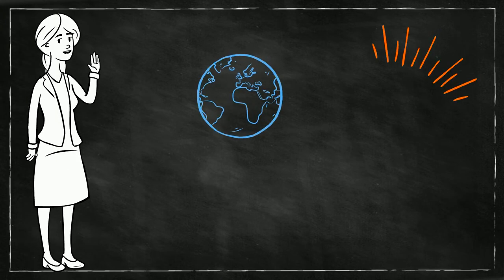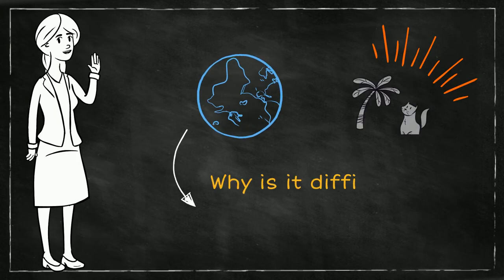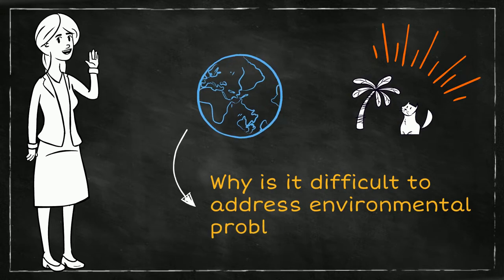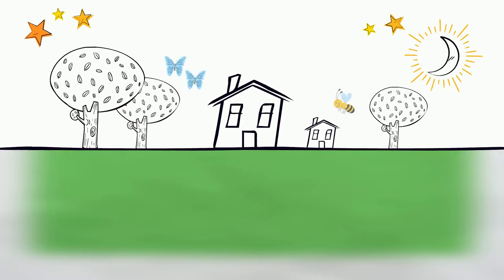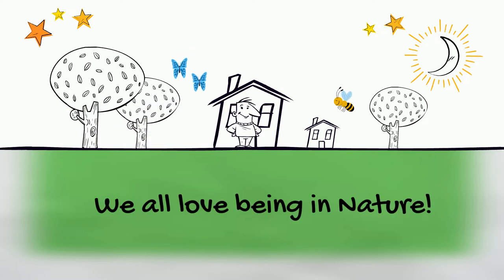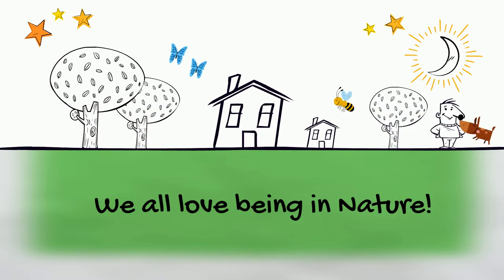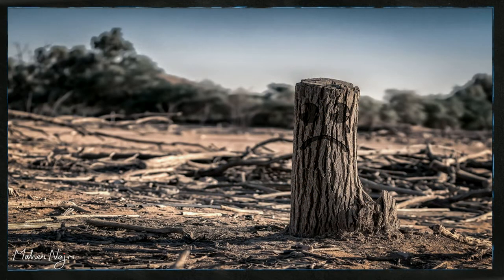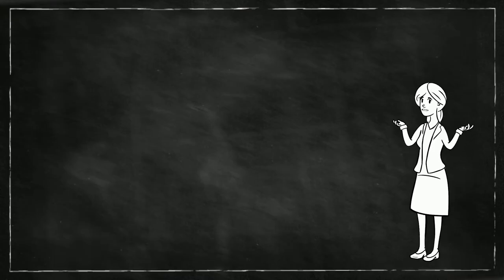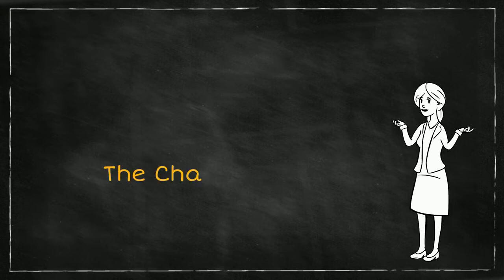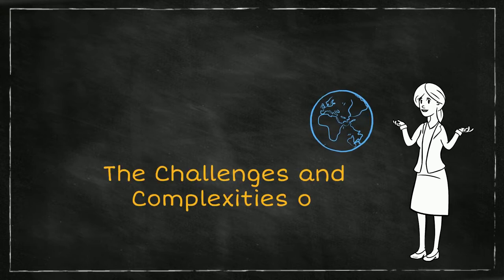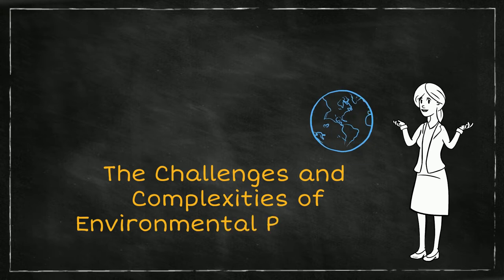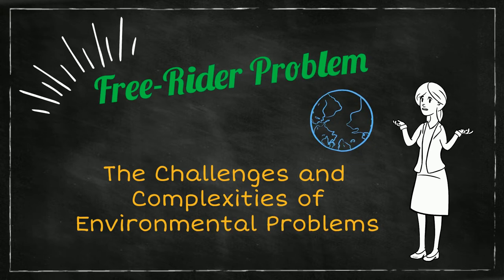Hello friends! Have you ever wondered why it is so difficult to address environmental problems? Most people appreciate the beauty of our natural environment and care about other life forms. And yet, our environment continues to degrade and environmental problems are becoming increasingly difficult to tackle. This video series will help you understand some of the challenges and complexities associated with environmental problems, and in this video we are going to talk about the free rider problem.